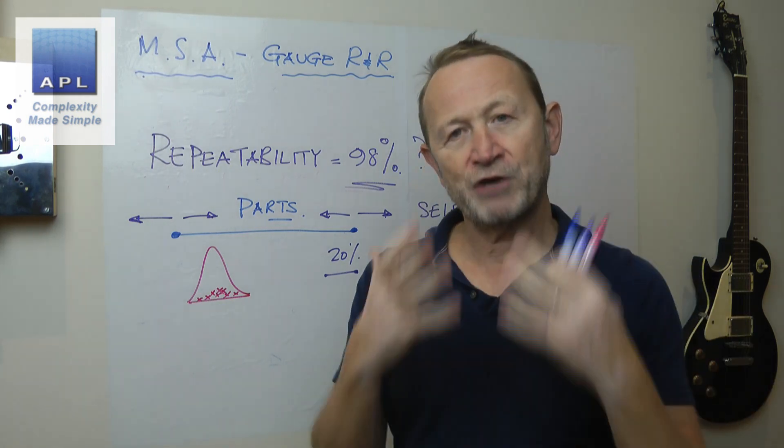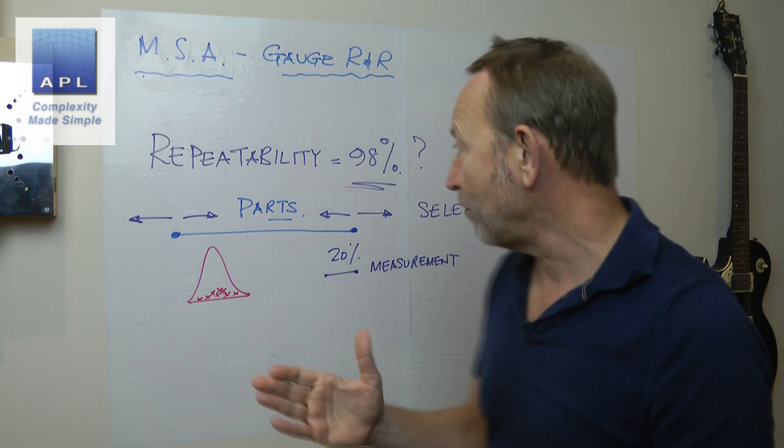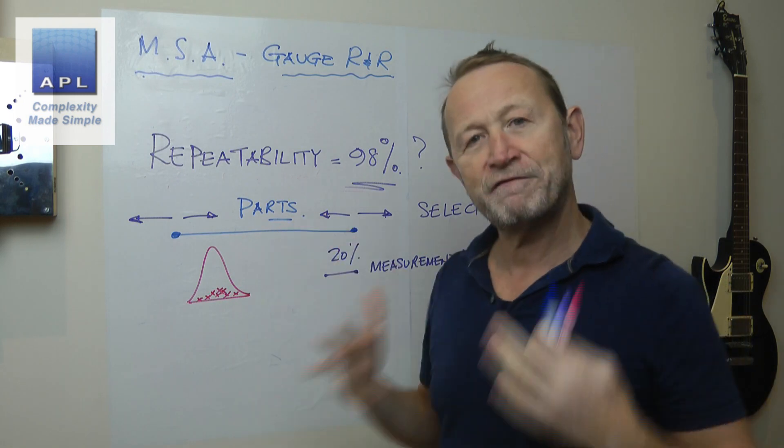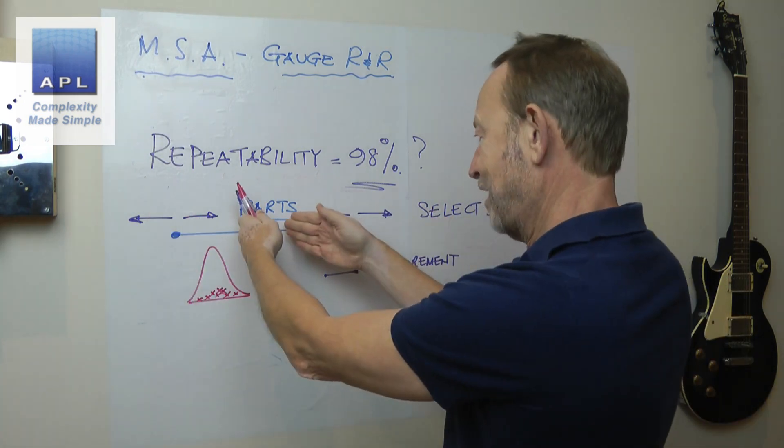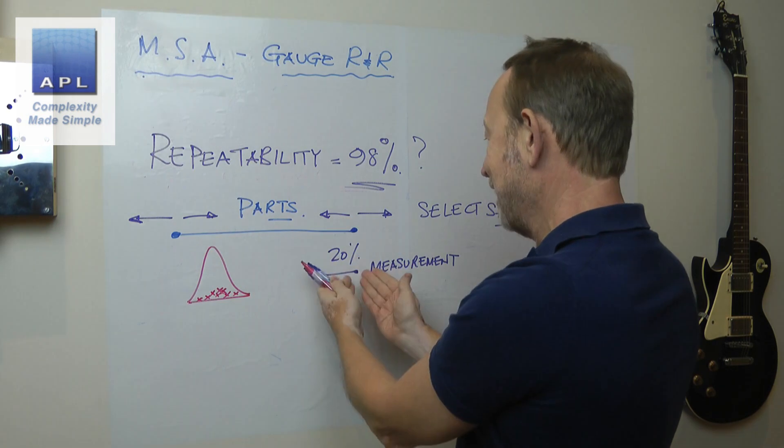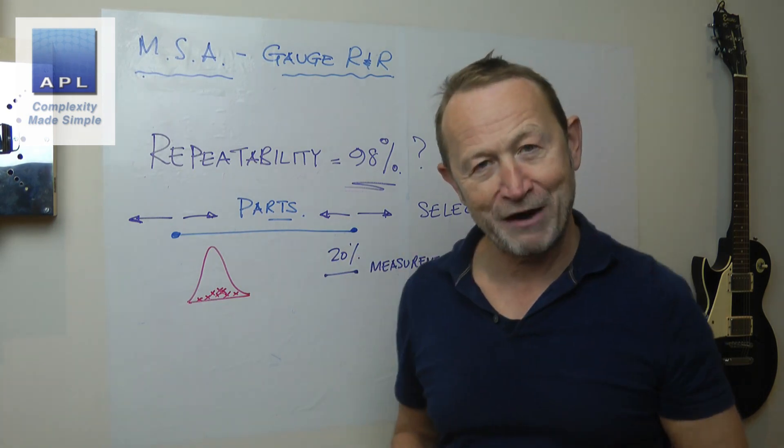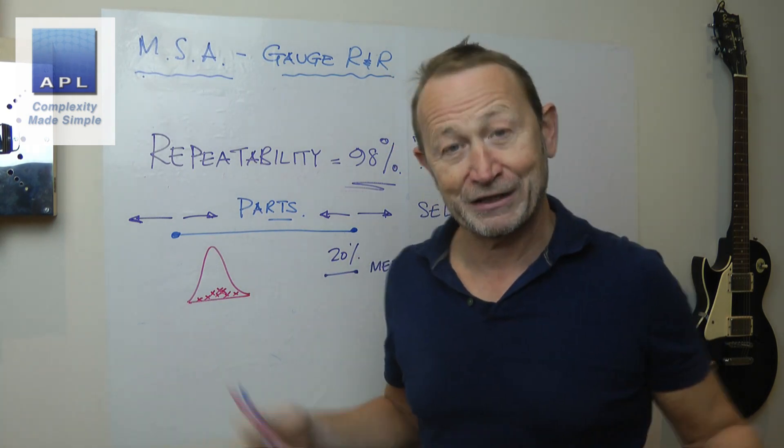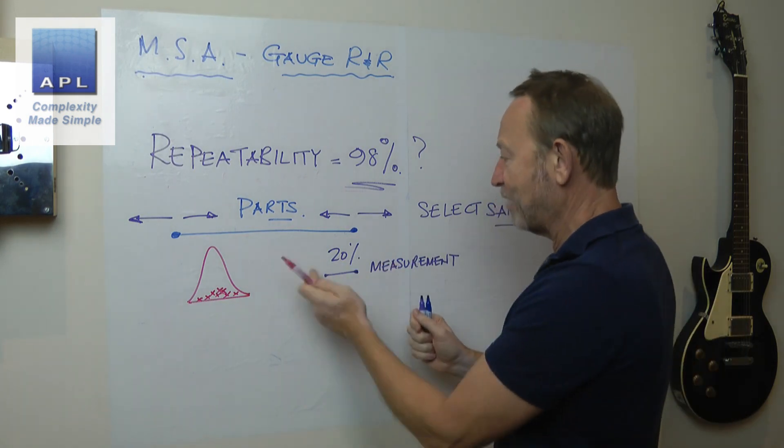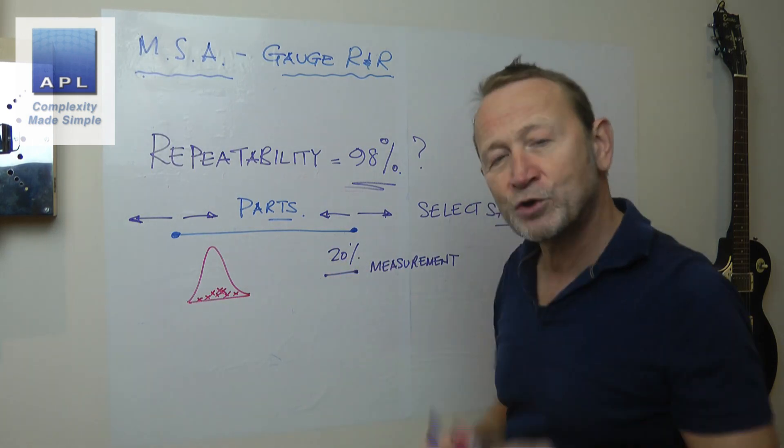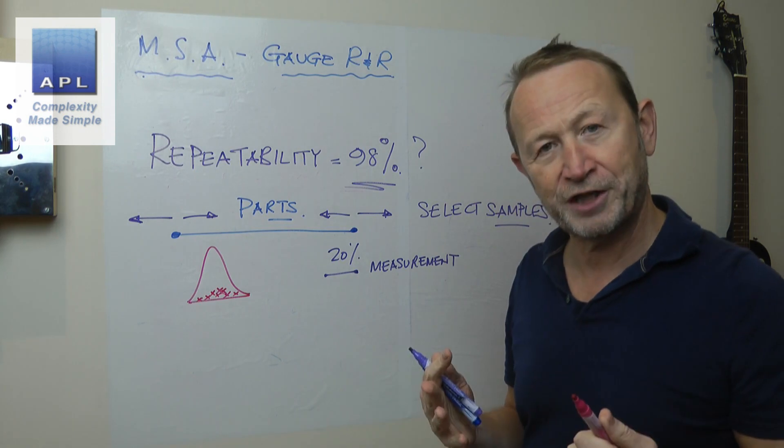Now, because it's a ratio, sometimes people have a problem who make very, very accurate components, because this then is very small, and it makes their measurement system error look so much bigger. So, for instance, at this point, we have a measurement error of 20%, which would kind of be okay.